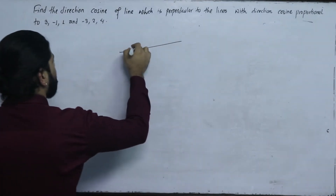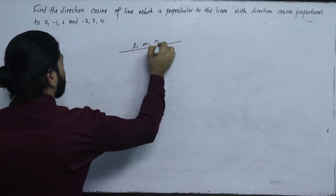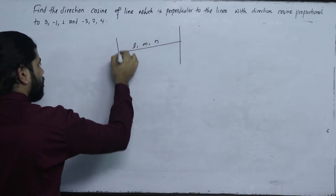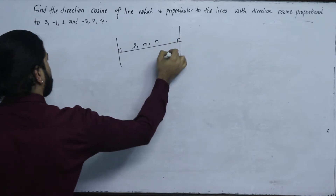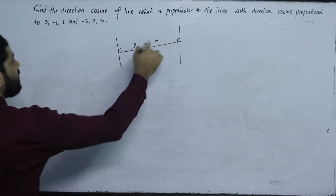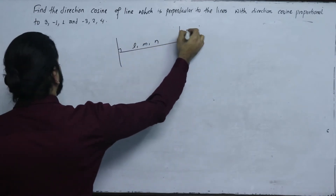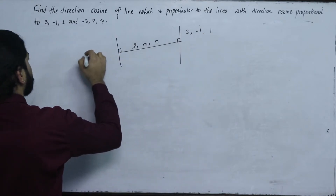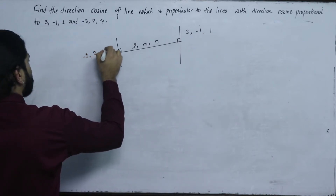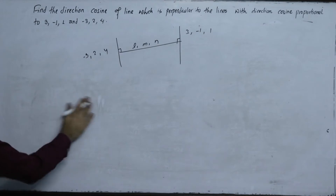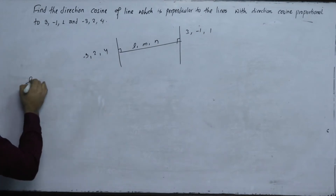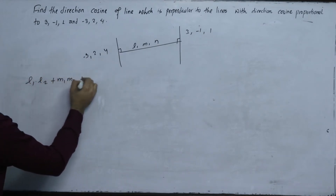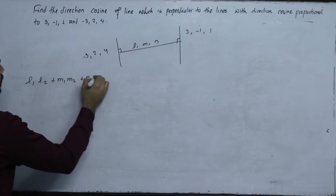We need to find a line perpendicular to two given lines. If a line is perpendicular to another line, then L1L2 plus M1M2 plus N1N2 equals zero.